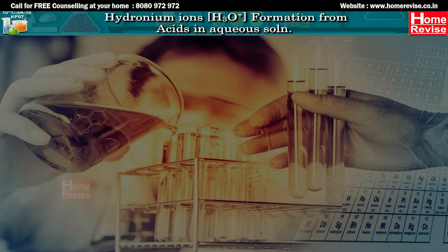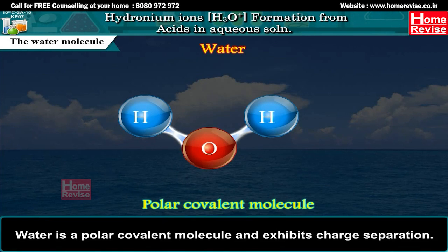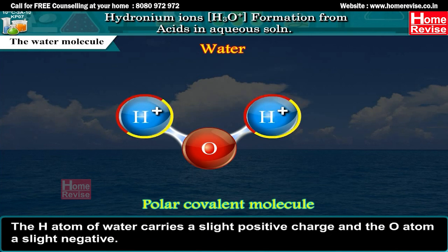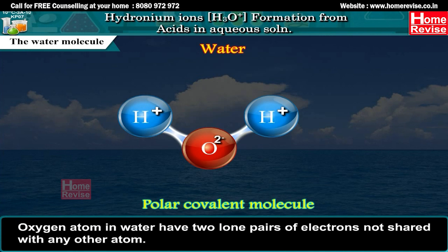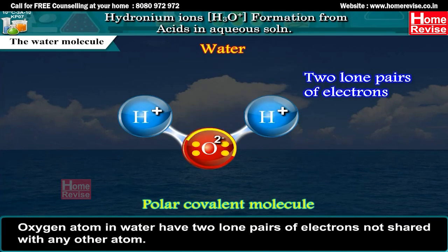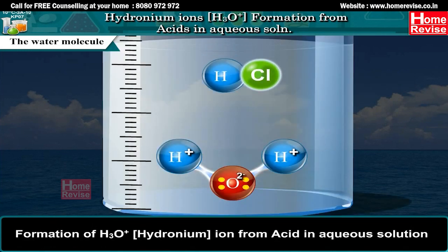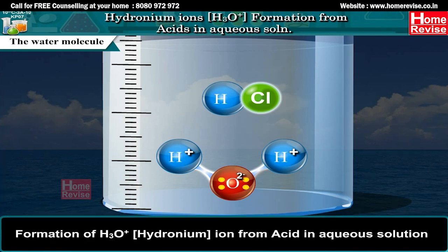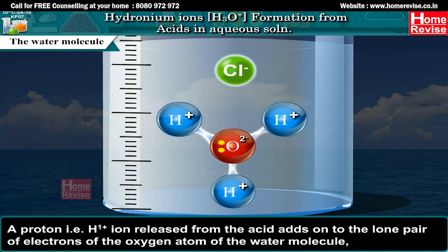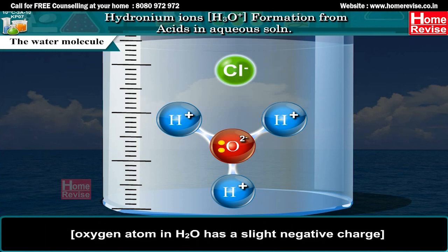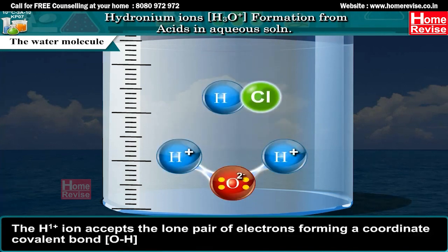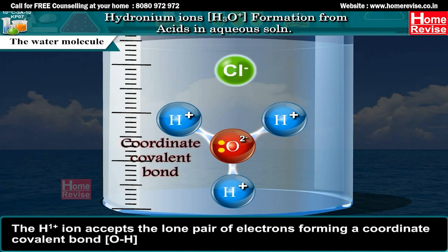Water is a polar covalent molecule and exhibits charge separation. The hydrogen atom of water carries a slight positive charge and the oxygen atom a slight negative charge. Oxygen in water has two lone pairs of electrons not shared with any other atom. A proton (H+ ion) released from an acid adds on to the lone pair of electrons of the oxygen atom of water, forming a coordinate covalent bond, producing the hydronium ion H3O+.